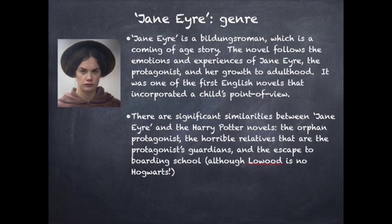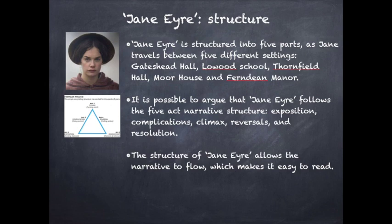Jane Eyre is structured into five parts as Jane travels between five different settings: Gateshead Hall, Lowood School, Thornfield Hall, Moor House, and Ferndean Manor.